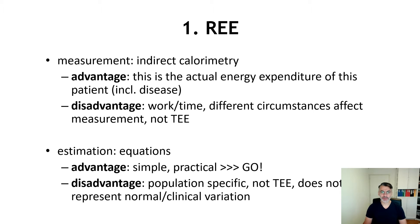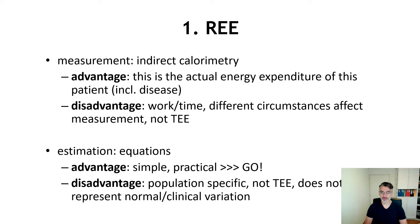Resting energy expenditure can be measured by indirect calorimetry, and more and more this is applied in the clinical situation. However, classically we need a fairly expensive apparatus to do that. The advantage is that the actual energy expenditure of this patient is being measured under current conditions, which is very important especially in disease, since the estimates based on healthy subjects are actually not applying to this patient.